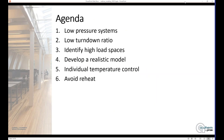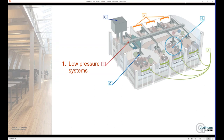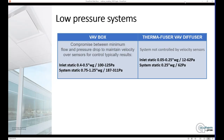So how are these buildings doing it? We're going to break it down into six areas today. We'll start with discussing low-pressure systems and low turndown ratios, then look into identifying high-load spaces in our models, then developing a realistic model, get into the individual temperature control provided by the diffusers, and then lastly look at avoiding reheat. So to get started, we're going to look at low-pressure systems.